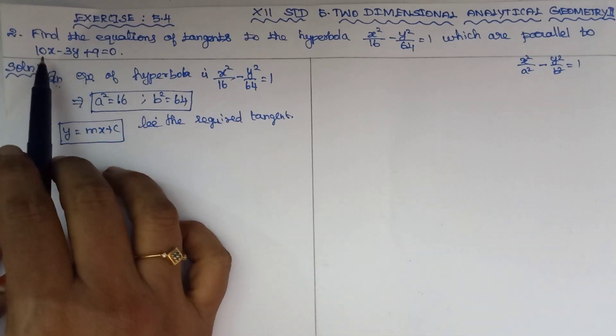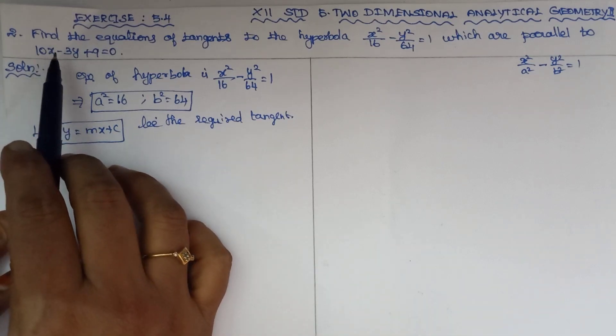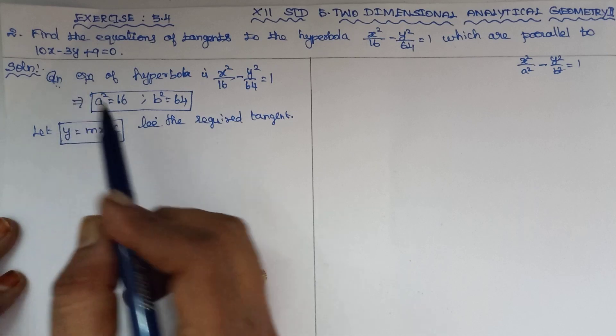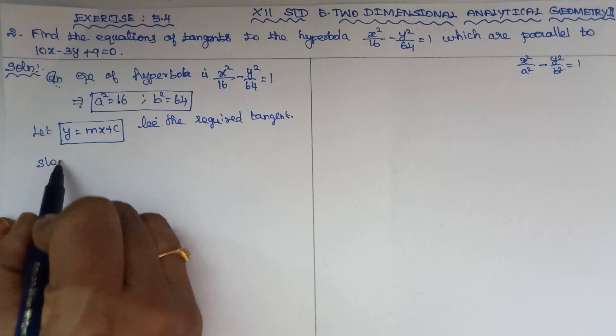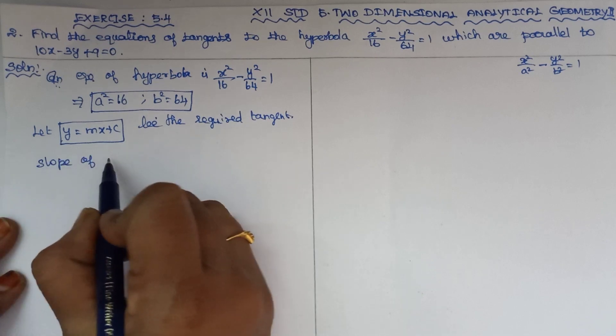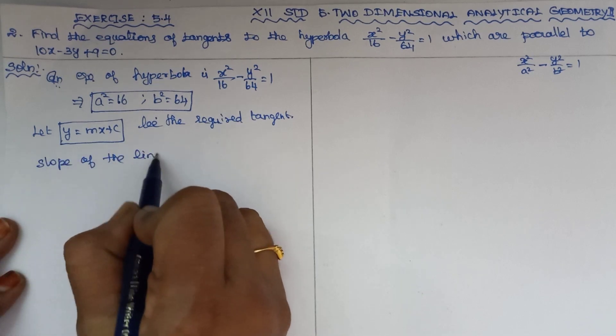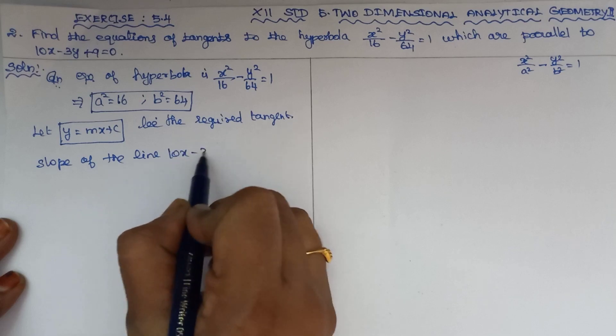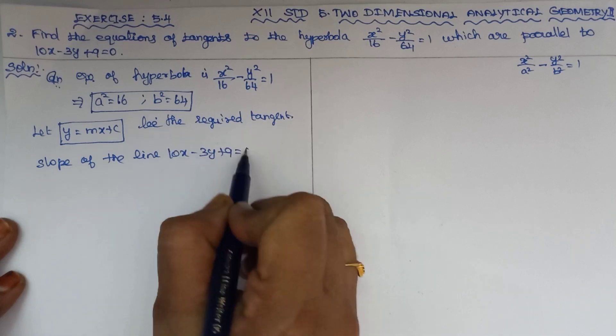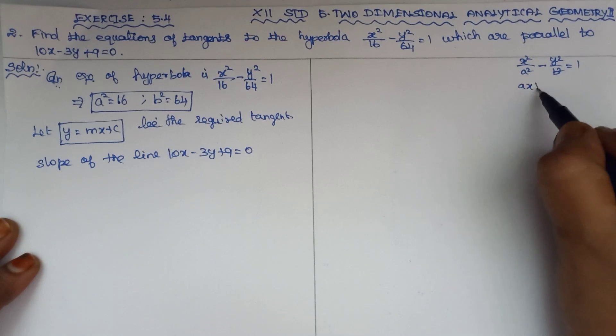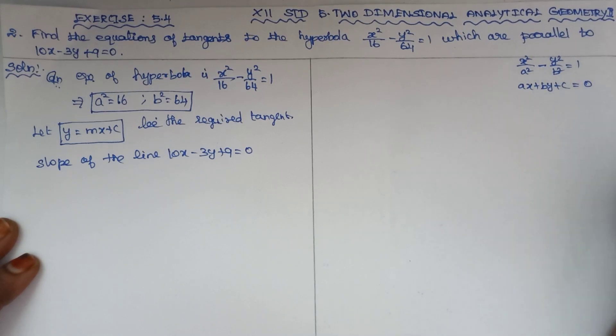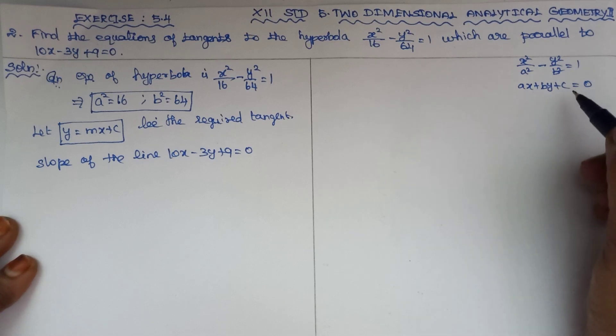We will find the slope of the line. First of all, slope of the line 10x minus 3y plus 9 is equal to 0. The straight line is in the formation of AX plus BY plus C equal to 0, which is the general form of the straight line.